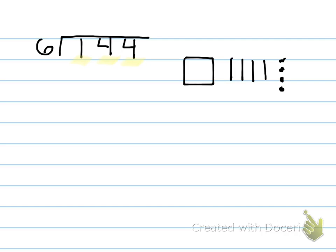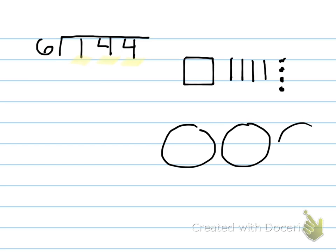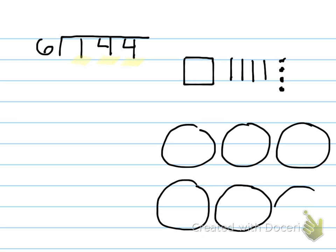Our divisor is 6, so we need 6 circles. 1, 2, 3, 4, 5, 6. There we go. Now we're ready. Starting with the greatest place, looking at this 100 — I don't have 6 hundreds to put in all these circles, I only have 1 hundred. So I have to break up this 100 into tens.